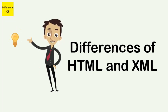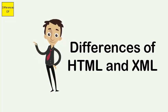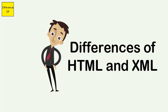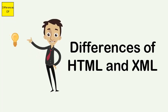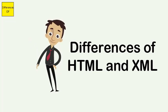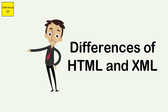HTML was invented in 1990. XML was invented in 1996. HTML is static in nature, while XML is dynamic in nature. HTML is used for displaying a web page. XML is used to transport data between the application and the database, and to develop other Markup Languages.